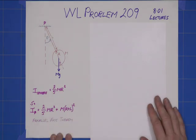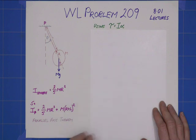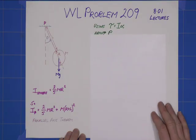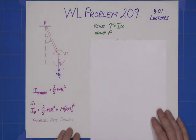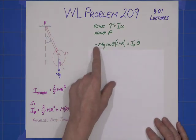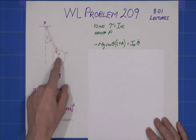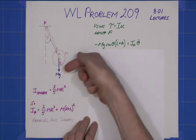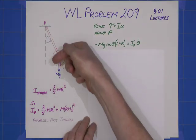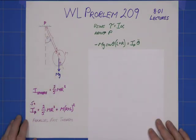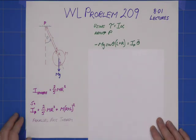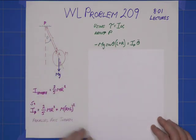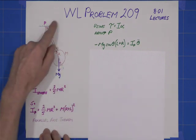Straightforward parallel axis theorem. We can then use τ equals Iα, which is the angular equivalent of F equals ma, about here, where we need to know the restoring force. It's about P, the restoring force, which is going to be minus mg sin θ times (l plus r).